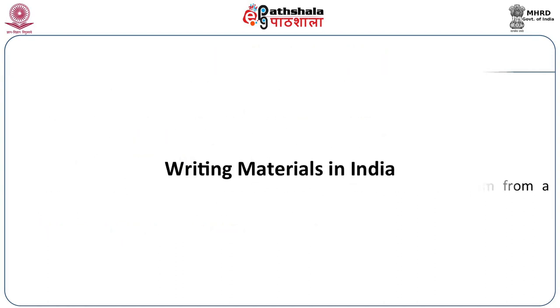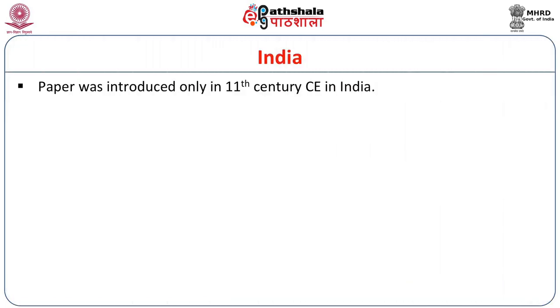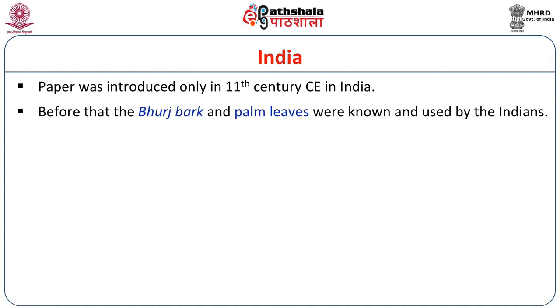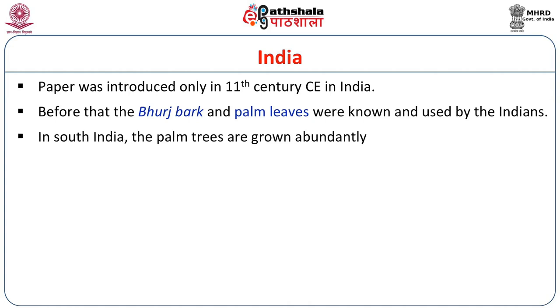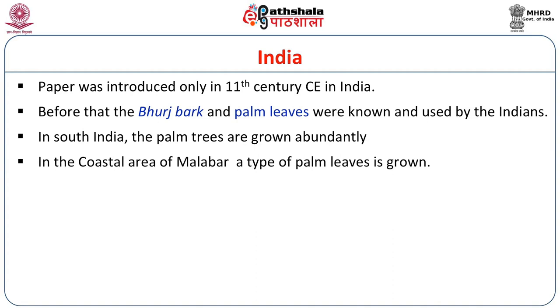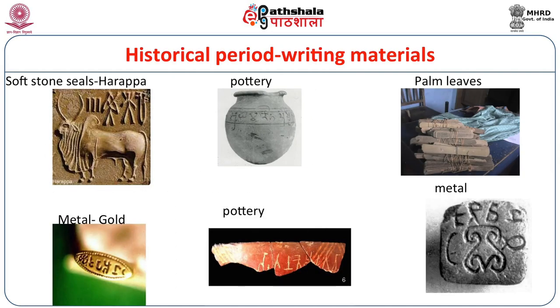Around 450 BCE, writing materials were used in India. There are many writing materials used by our ancestors: stone, copper, papers like bamboo leaves, then birch bark, copper, iron, crystal, shankha, wooden plates, and other earthen materials. Paper was introduced only in the 11th century CE in India. Before that, birch bark and palm leaves were known and used. Birch bark was known in North India, while in South India palm trees grow abundantly, and people used palm leaves for making papers. In the coastal area of Malabar, a type of palm leaves was grown and used as writing material.